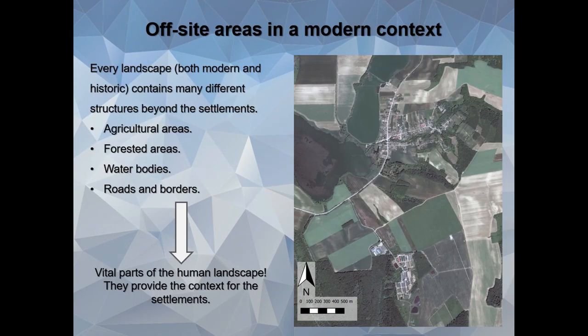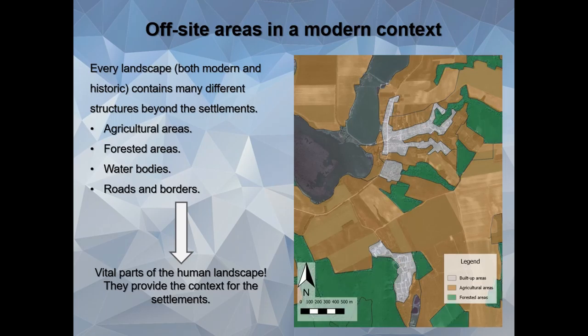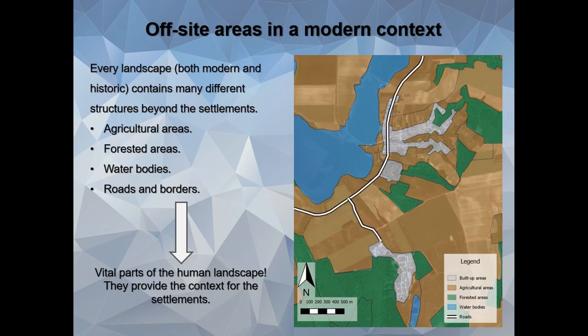I wanted to start off by looking at the recent satellite image. If you look at it, we can see that outside the settlements themselves, we can see lots of different kinds of use for the landscape, like agricultural areas, forested areas, water bodies, or even roads that are part of the cognitive landscape. While these areas are not directly inhabited, they form an important part of the landscape as they give the context of the settlements themselves.